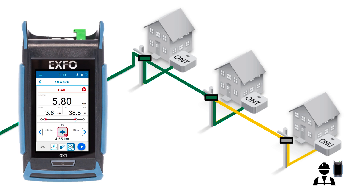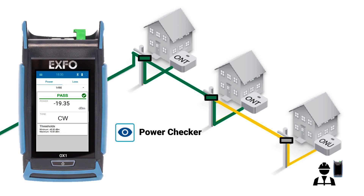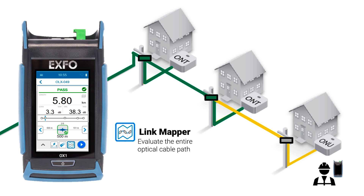Next, the tech can confirm power levels are restored and in line with the RX power requirements using the OX-1's Power Checker Mode. Lastly, the tech can use the filtered 1650nm port to shoot an in-service Link Mapper to confirm that the path is clean and free of events or issues. The tech can then close the ticket and move to the next job.